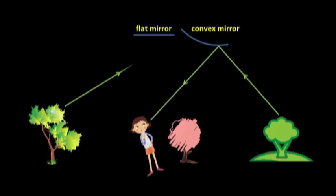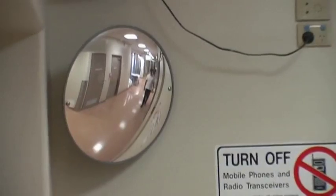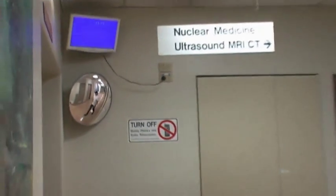We then look at some examples of the many uses of convex mirrors which can be found in car parks, in hospital corridors, and on cars and other vehicles.